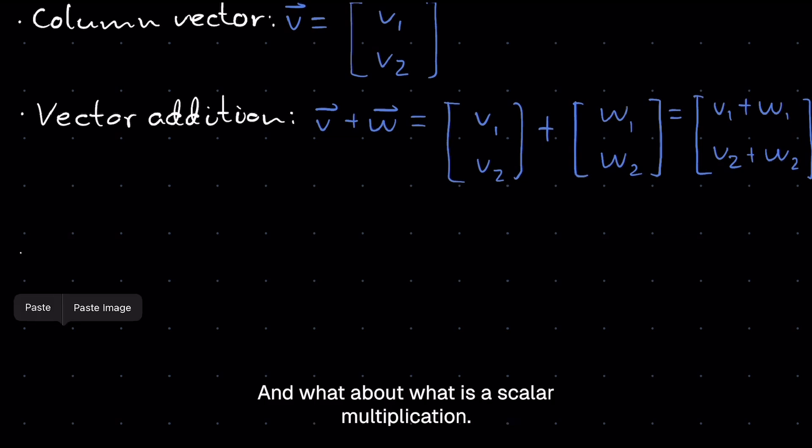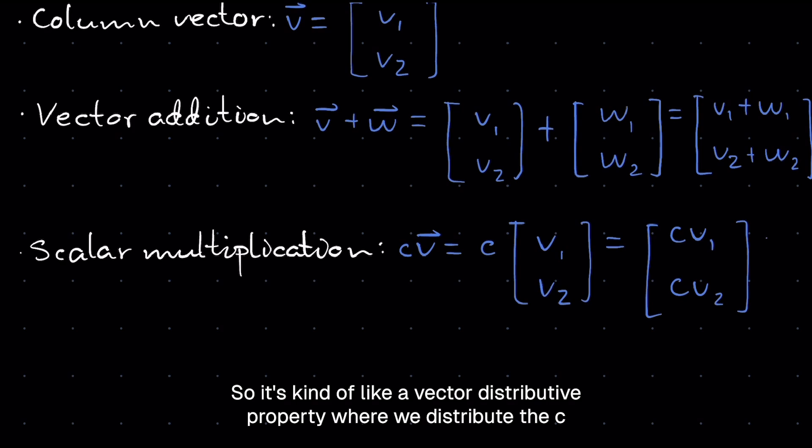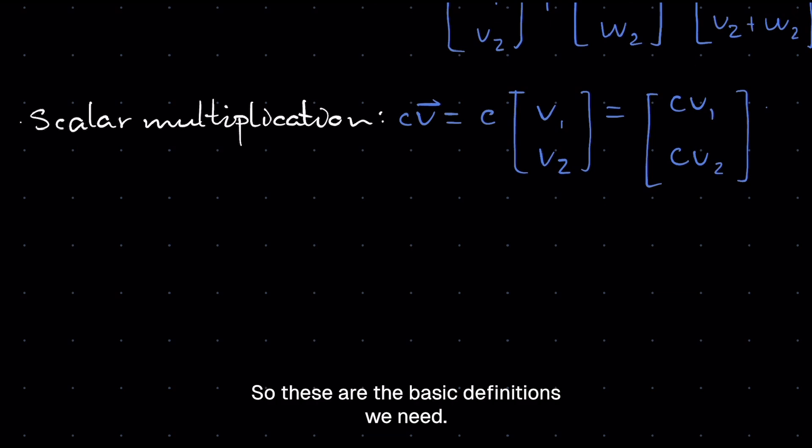And what about scalar multiplication? So this is basically C times V1, V2, which is equal to CV1, CV2. So it's kind of like a vector distributive property where we distribute the C in each component. So these are the basic definitions we need.